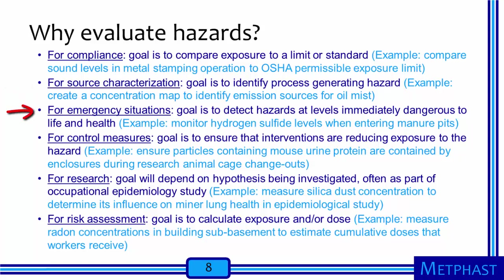In emergency situations, we might seek to detect hazards that are immediately dangerous to life and health. An example is the need to monitor hydrogen sulfide levels when workers enter a manure pit to perform maintenance or cleaning. Control measures might need to be evaluated to ensure that interventions designed to reduce hazardous exposures are working as planned — for example, ensuring that airborne particles containing mouse urine proteins are kept within ventilated enclosures during the change-out of research animal cages. We might also evaluate hazards as part of research, sometimes as part of a larger occupational epidemiology study. An example I worked on was measuring silica dust concentrations to determine the effect of dust on the lung health of taconite ore miners on the Iron Range in northern Minnesota.